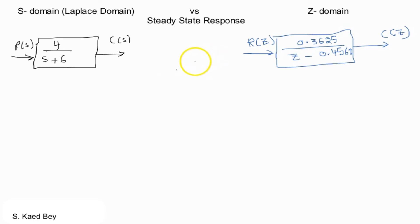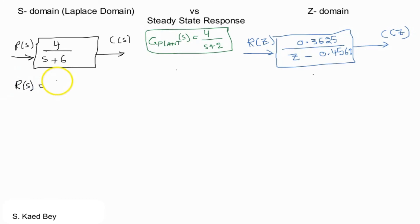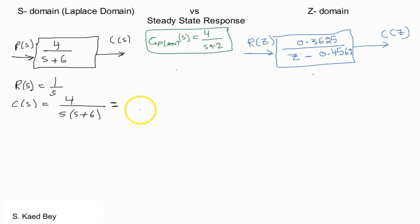Remember, both of these systems represent the same plant transfer function — the water level tank system found previously. The question is: will these two systems, one in the continuous S-domain and the other in the discrete Z-domain, behave the same given a certain step input? If we consider the step input R(S) equals a unit step, 1 over S, then the output in this case will be as follows.